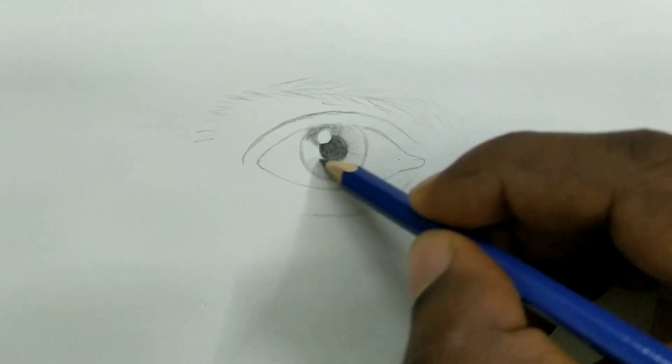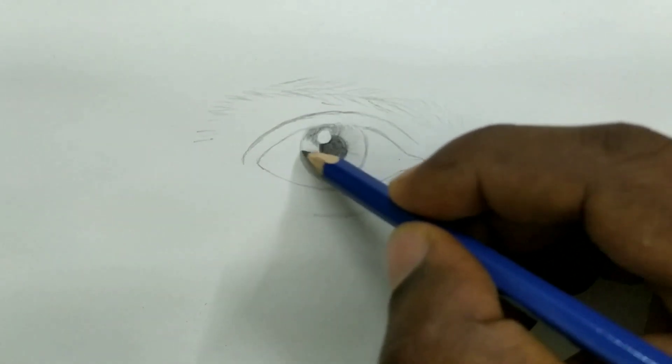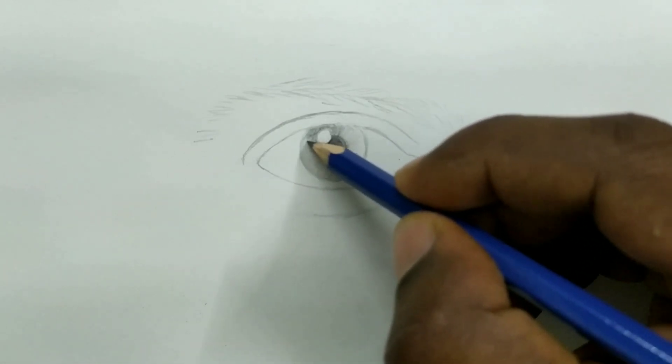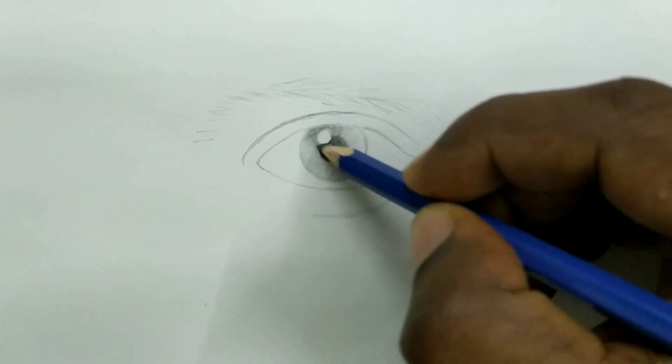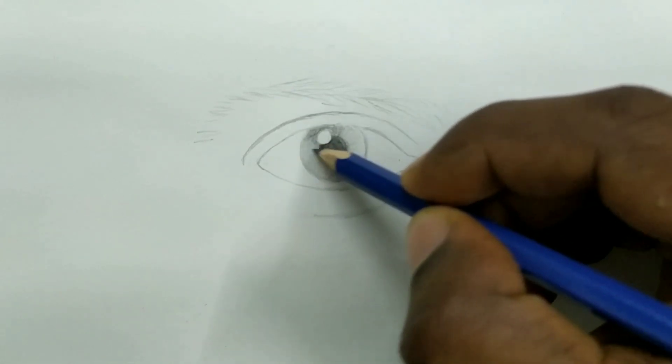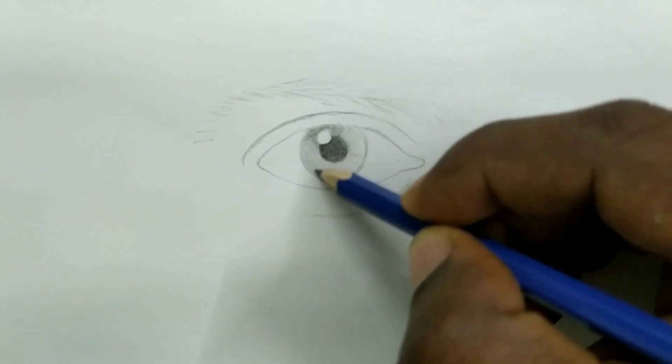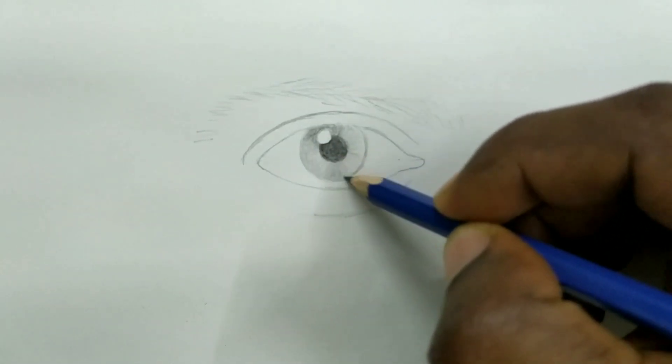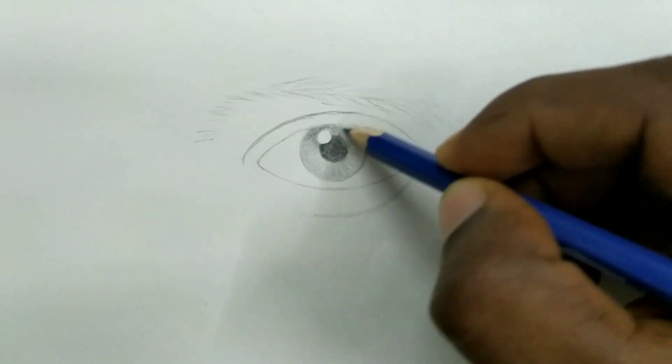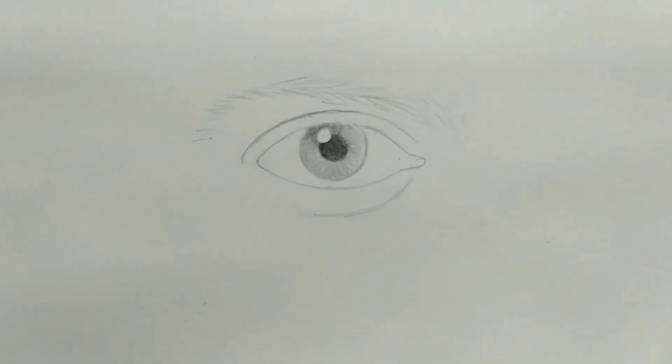So we will continue with our shading. Make the lines concentric because the iris have so many ridges, so we can make small small lines also so that will look very real.